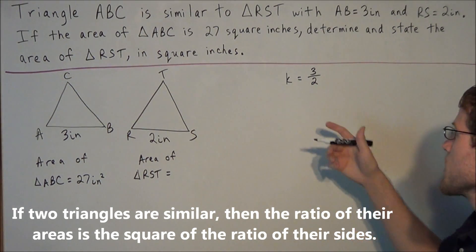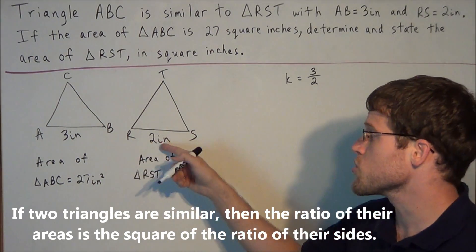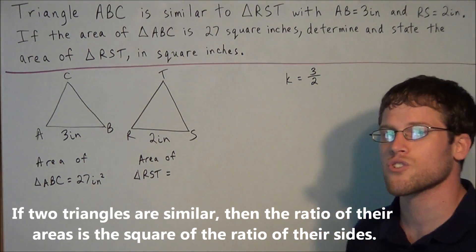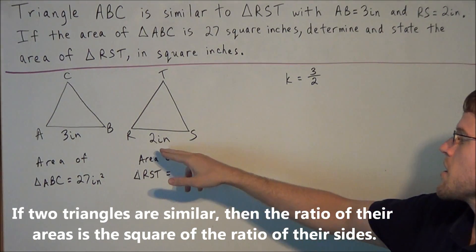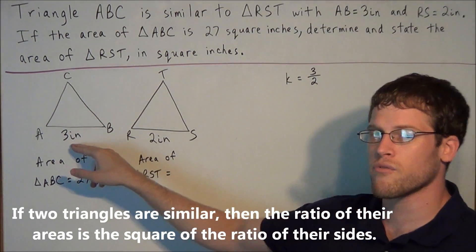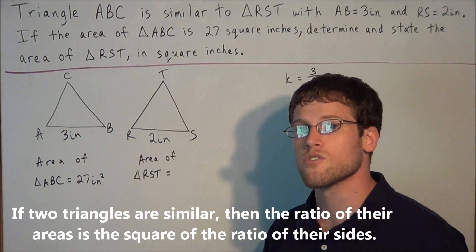In some classes they may call this the scale factor, which represents the ratio between the two similar triangles. But all this really does is help us get from one triangle to the other. For instance, if we take 2 and we multiply it by 3 over 2, it'll bring us to 3 in the other triangle. So it's just a way to navigate back and forth between the two similar triangles.